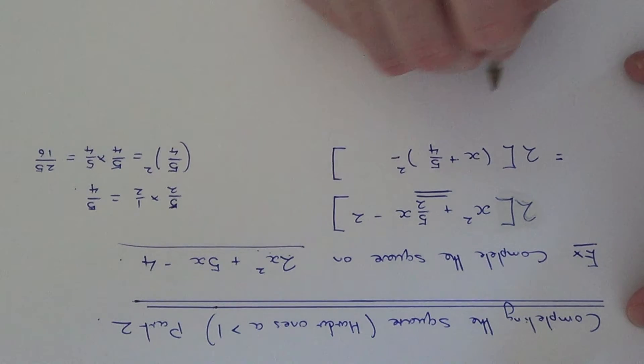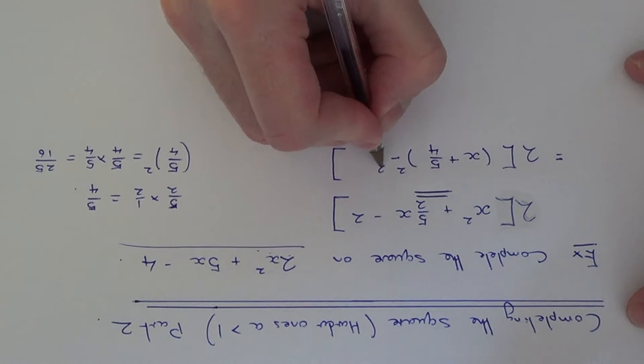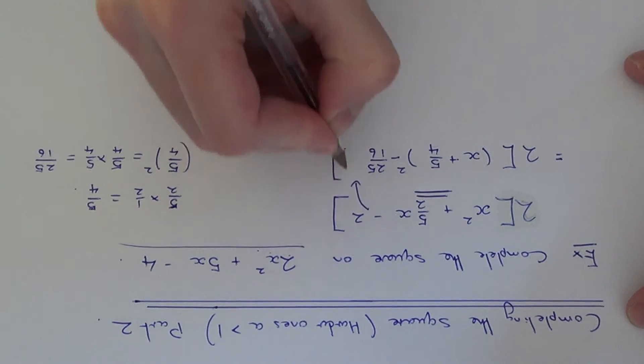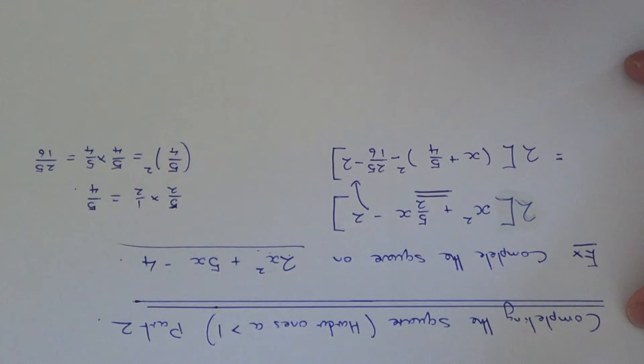And then we subtract this fraction off the end here. And then we just need to copy down that minus 2 to the next line.